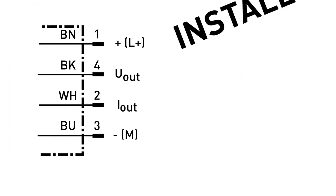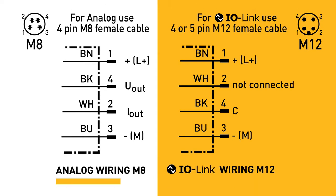The first step is to install the CPS to the proper operating voltage. Note the difference between the milliamp analog connection versus the M12 IO link.